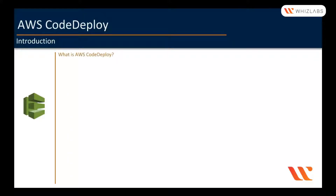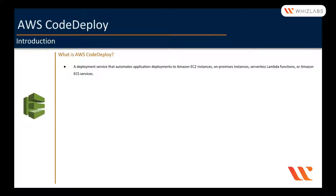So what is AWS CodeDeploy? CodeDeploy is a deployment service that automates application deployments to Amazon EC2 instances, on-premise instances, serverless Lambda functions, or Amazon ECS services. This service plays a major role in continuous delivery and continuous deployment on AWS.